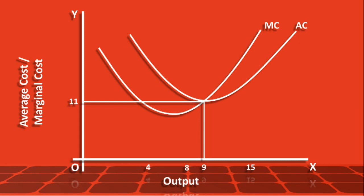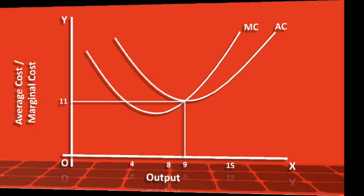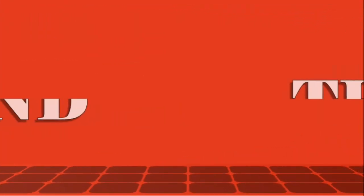The marginal cost curve cuts through the minimum point of the average cost curve from below. Students are advised to keep one important thing in mind while studying this relation: try to fix the direction of the average cost curve with reference to the magnitude of the marginal cost. And that ends our discussion. We shall meet again.